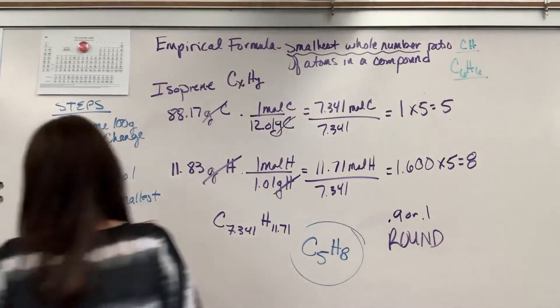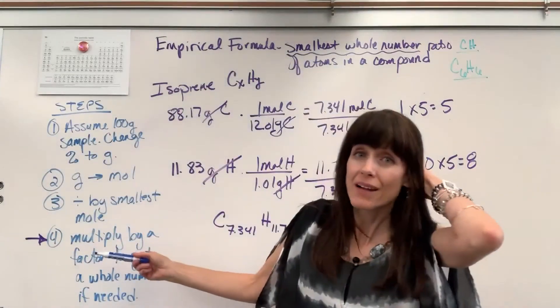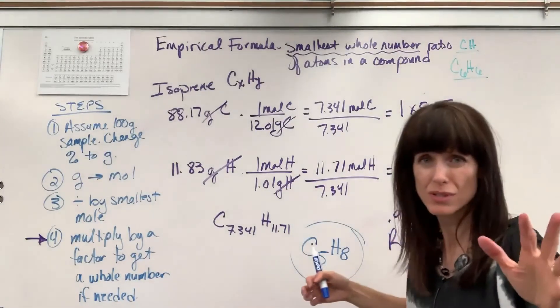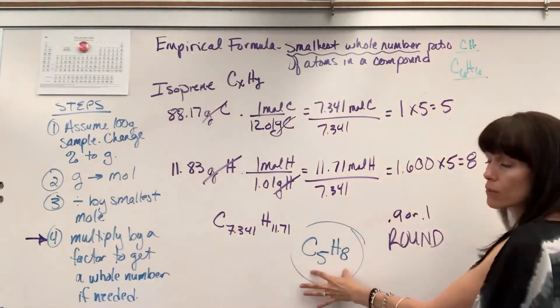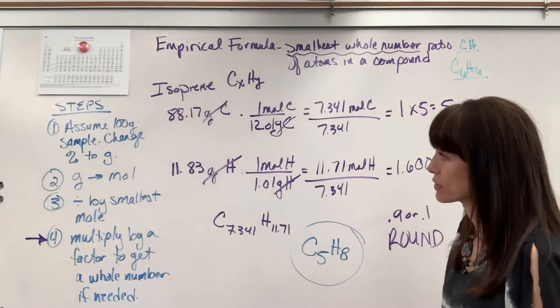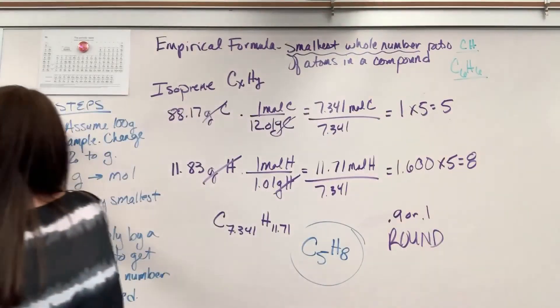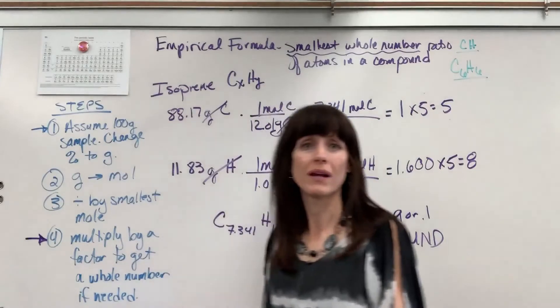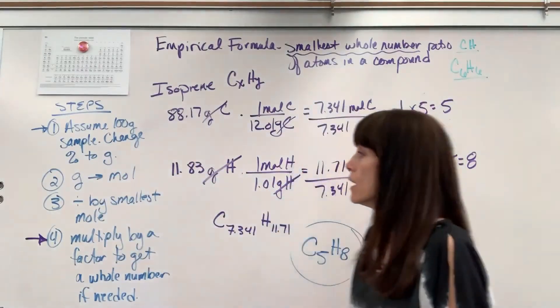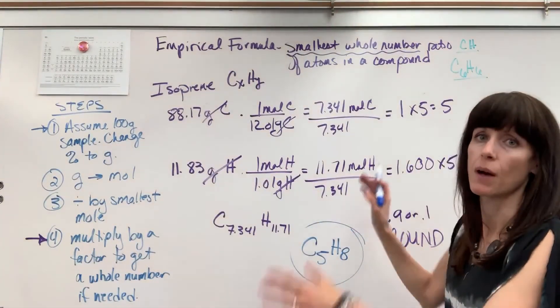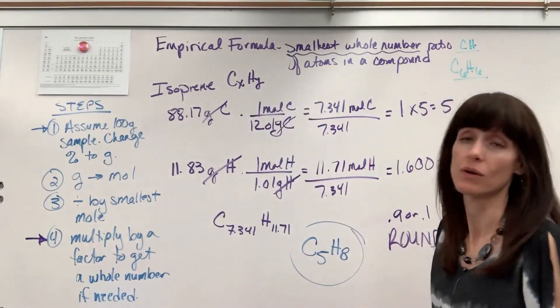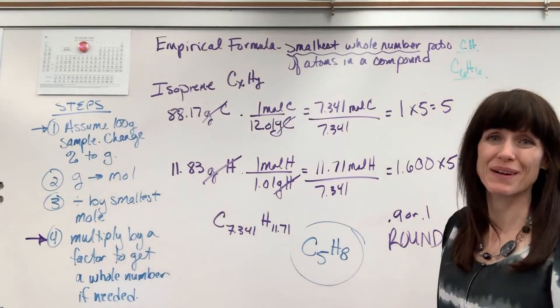I want to point out step 4. You might not have to do. Again if you get whole numbers when you divide by the smallest mole which usually you will, you're done. You go right here. It's only if you have a decimal that's between 0.2 and 0.8 that you need to multiply by a factor. Number one right here. That one as well you might not need to do. If I give you grams you skip and you go right to number two. The driving force in all of this remember is molar ratio. We're finding the smallest moles. The molar ratio between all the elements. Empirical formula. Good work.